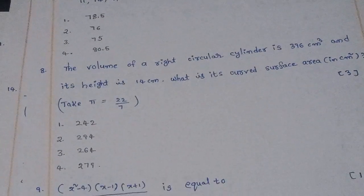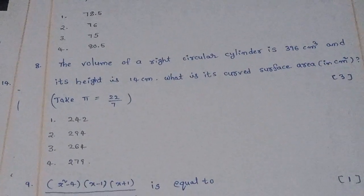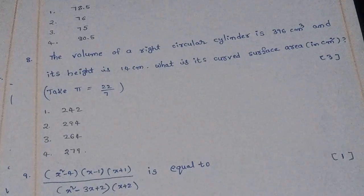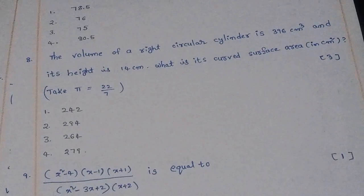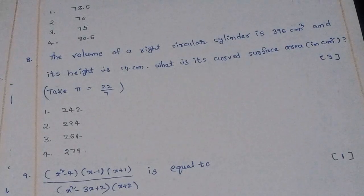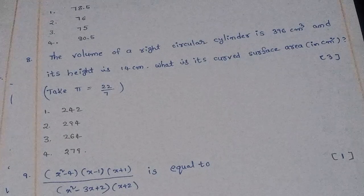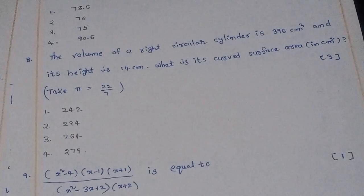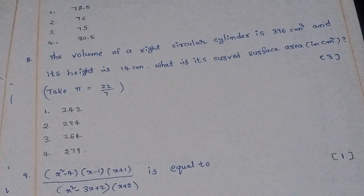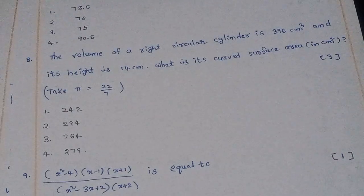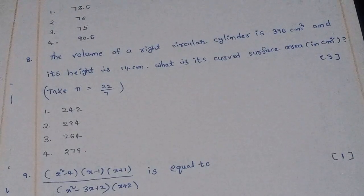Eighth question: The volume of a right circular cylinder is 396 cm³ and its height is 14 centimeters. What is its curved surface area in cm²? (Take π = 22/7.) The right answer is option 3: 264 cm².